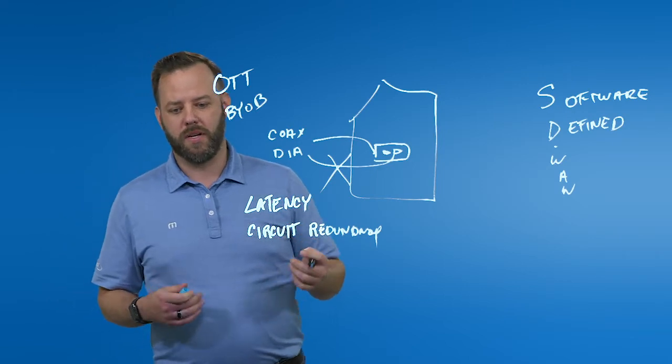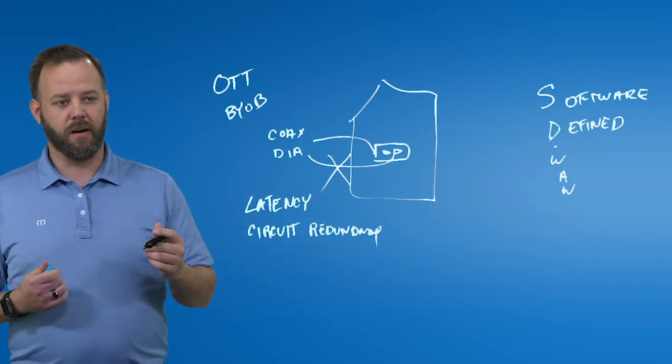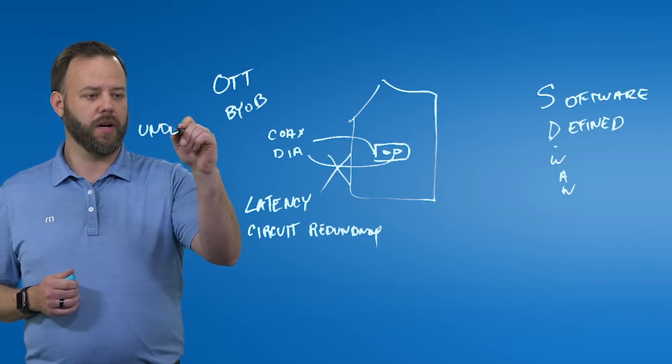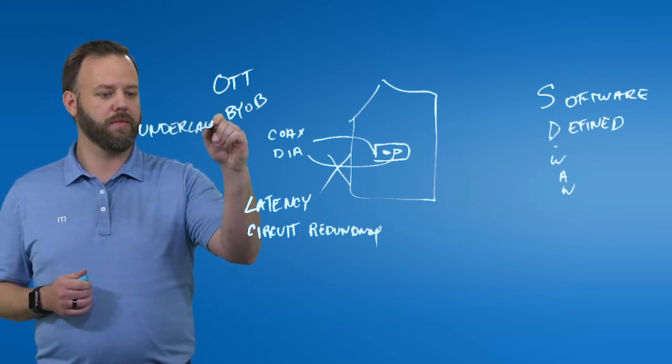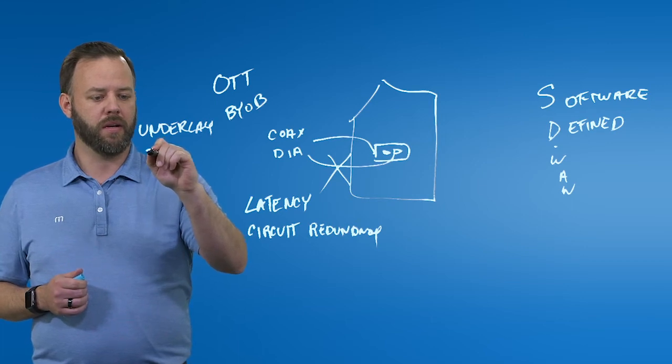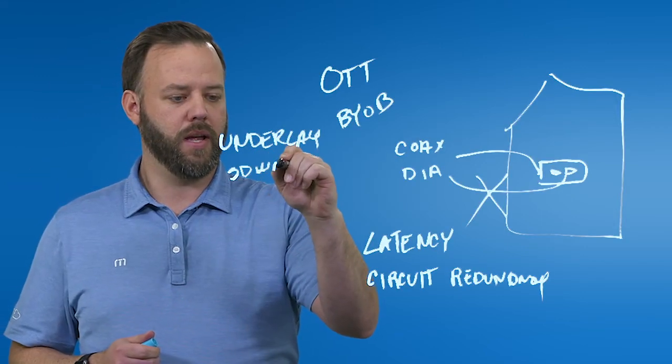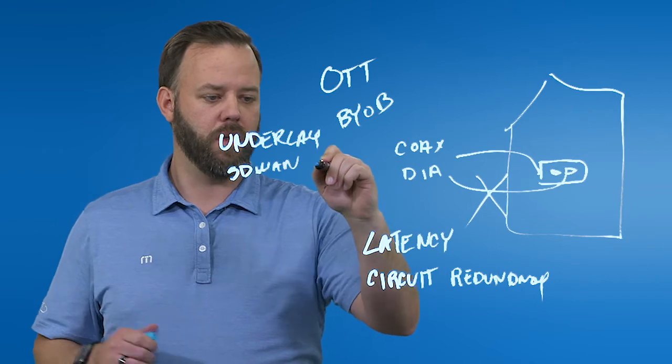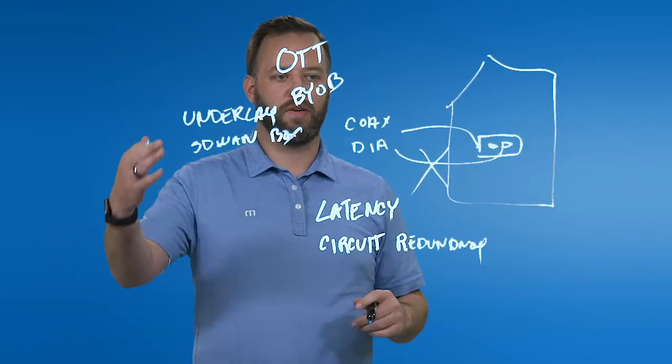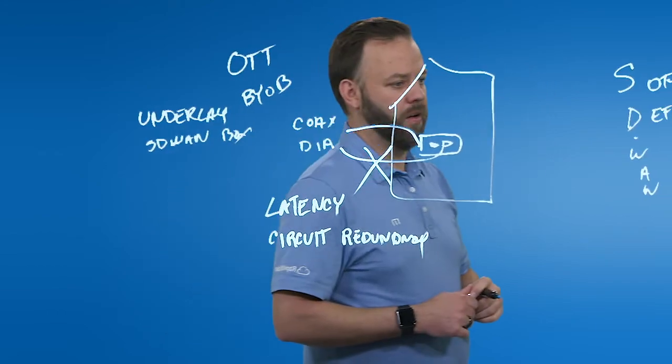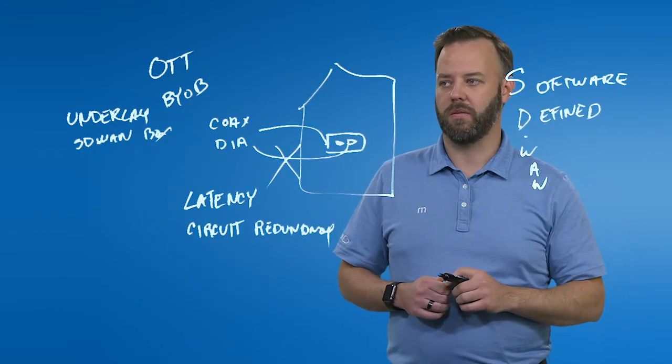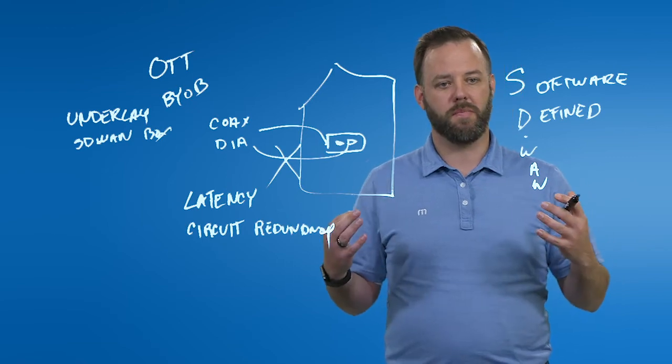The other deployment is buying it from your carrier where the carrier provides what's called underlay, or the actual connectivity. So, they provide that and they provide the SD-WAN boxes. They're providing the connectivity, they're providing the SD-WAN solution, and they're also monitoring, managing, and proactively notifying you as a customer when there might be issues.